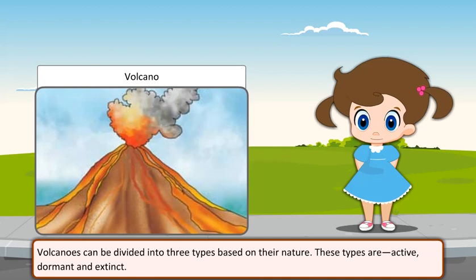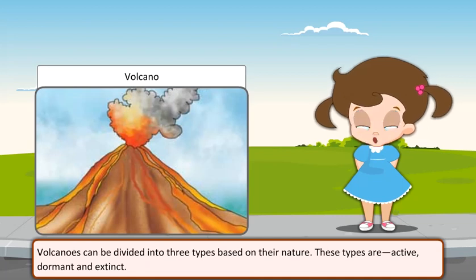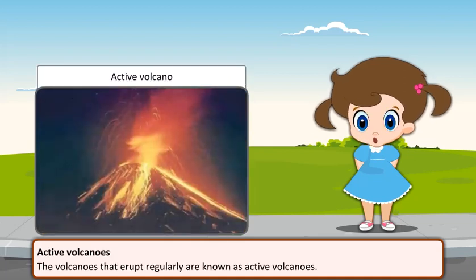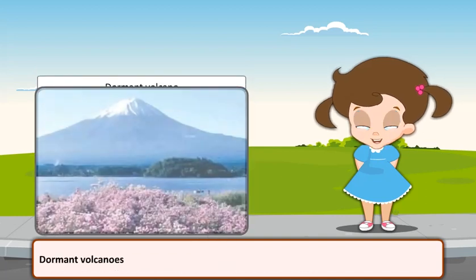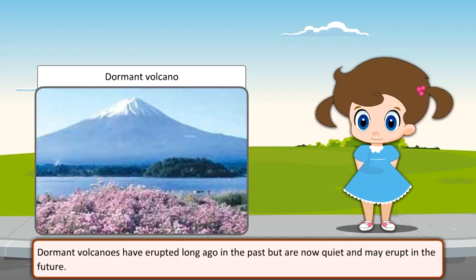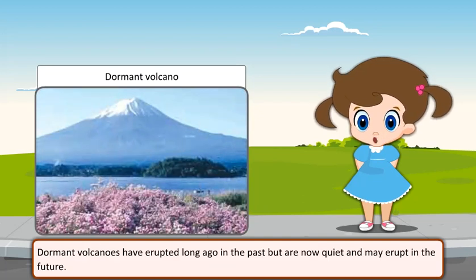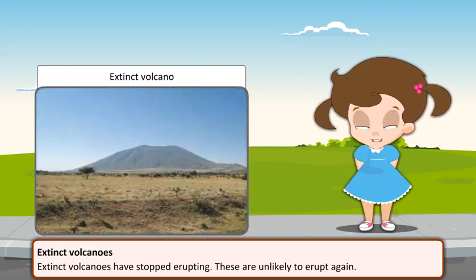Volcanoes can be divided into three types based on their nature: active, dormant, and extinct. Active volcanoes are those that erupt regularly. Dormant volcanoes have erupted long ago in the past but are now quiet and may erupt in the future. Extinct volcanoes have stopped erupting and are unlikely to erupt again.